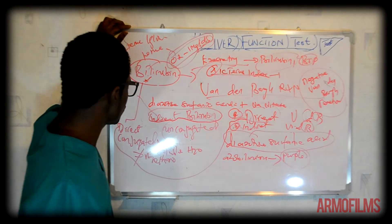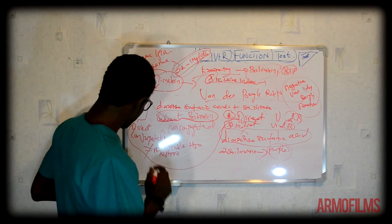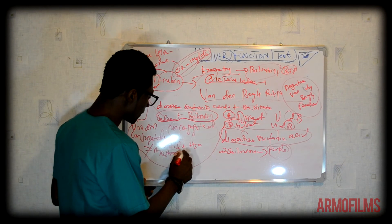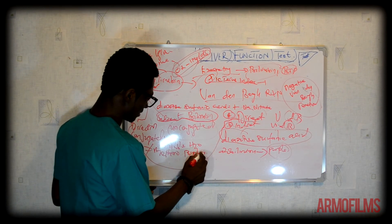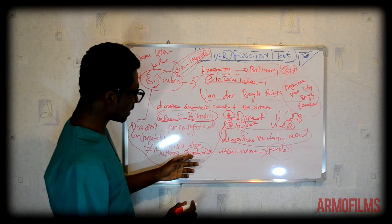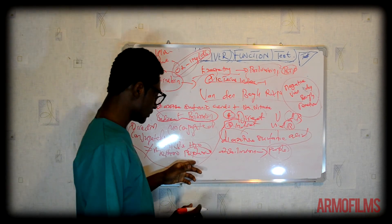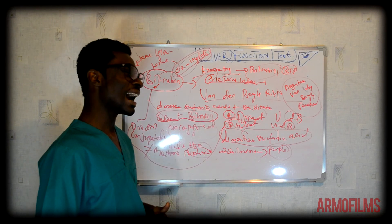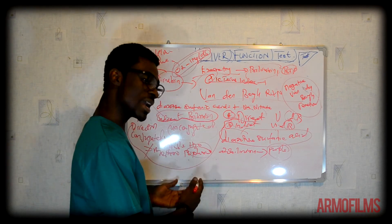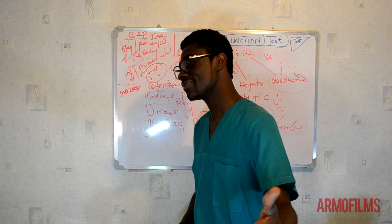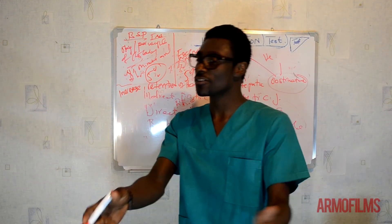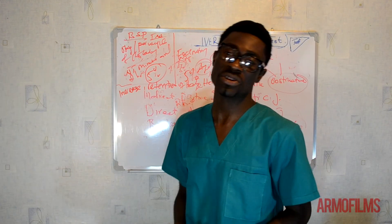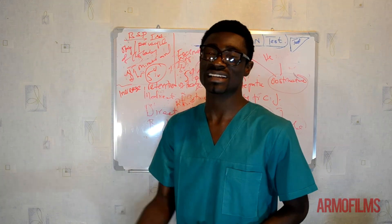It's also important to know that in the direct bilirubin pathway, you can also have what is called a biphasic pathway. In this biphasic pathway, it involves the addition of methanol as well. For more on liver function tests, click on the next episode for a better understanding of the concept.